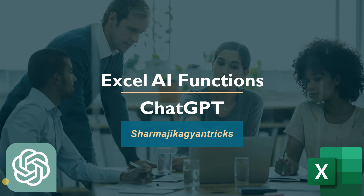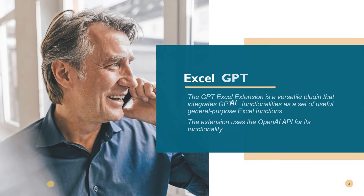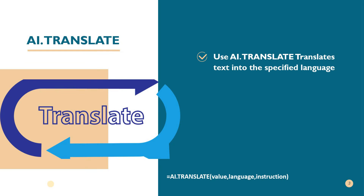Hi everyone, welcome. Today we are doing the Excel AI functions — how AI can help in Excel. We are using the ChatGPT add-in in Excel, which provides functions we can use in our daily life. Today we are looking at ai.translate, which is used if you have text in a specific language and you want to translate it into English or another language.